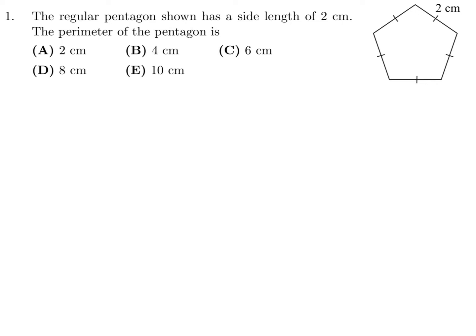The pentagon shown has a side length of 2. What is the perimeter? There are 5 sides to this pentagon, so the perimeter would be 5 times the side length, which is 2, so that is 10. You have 2 here, 2 here, 2 here, 2 here, and 2 here. Add them all up and you get 10. So the answer is E.